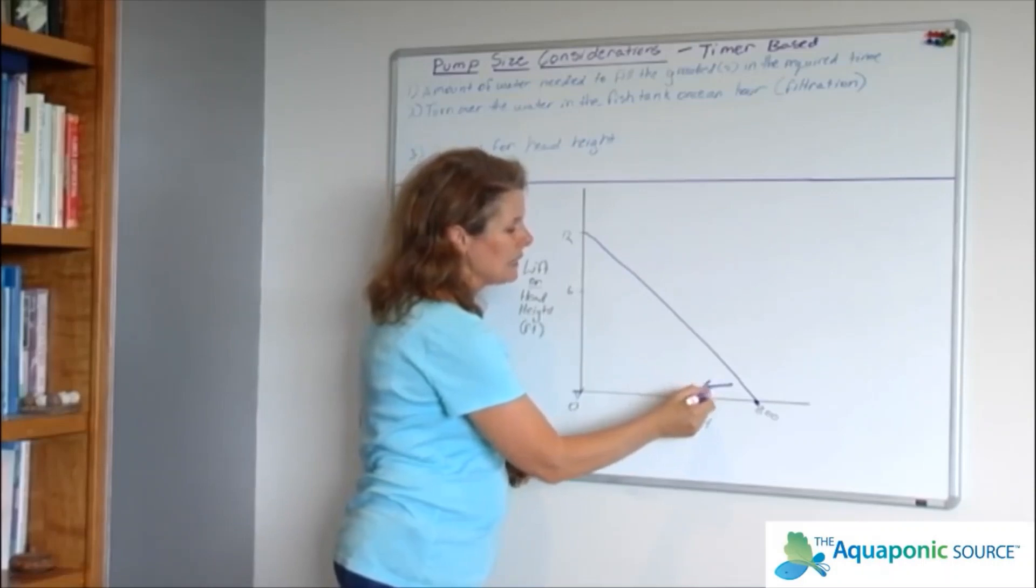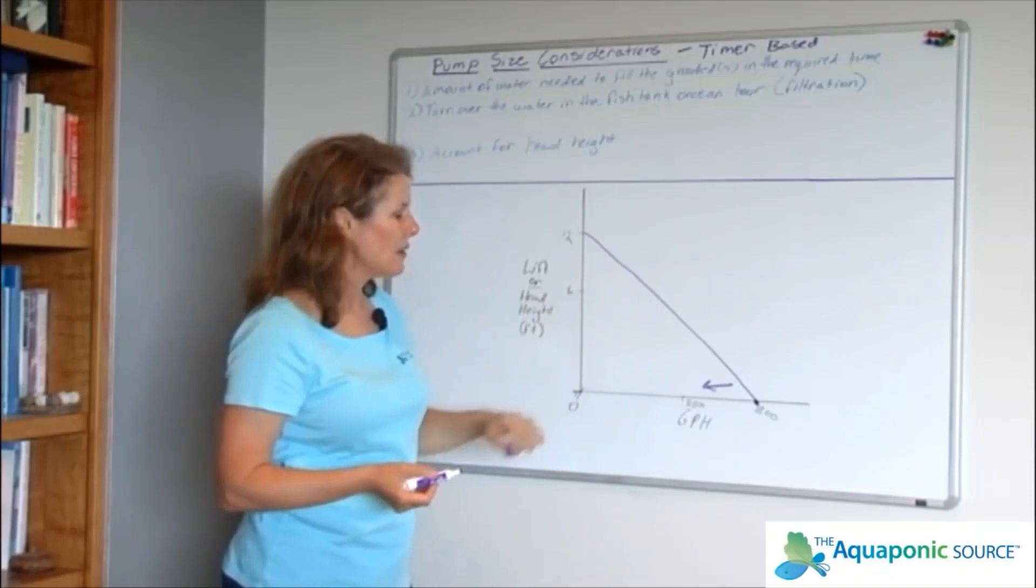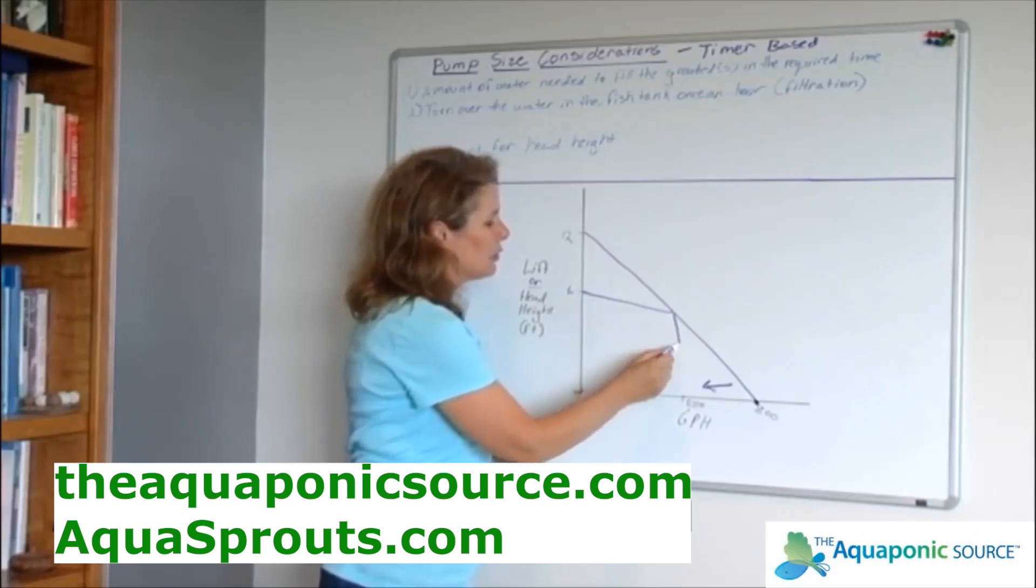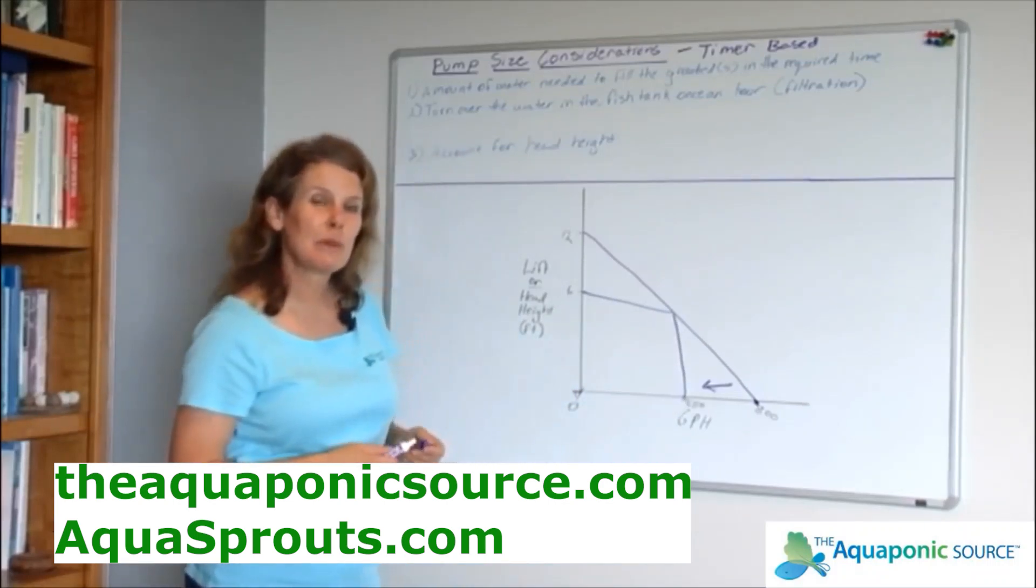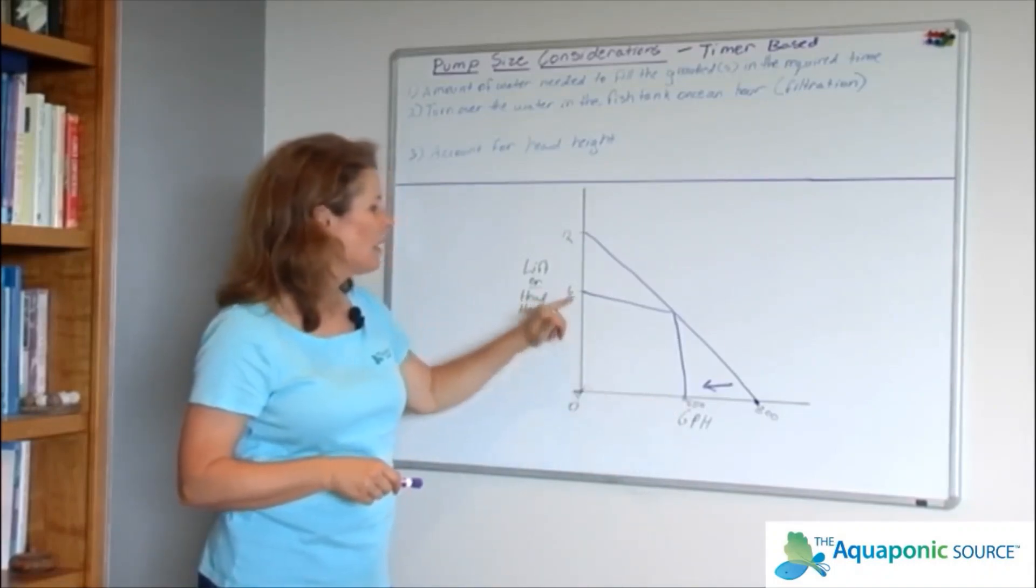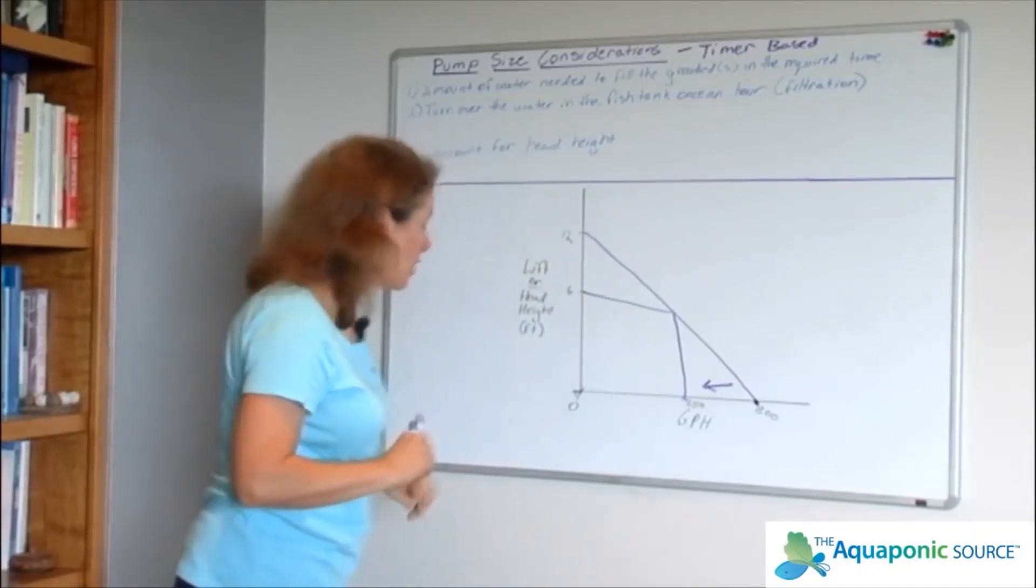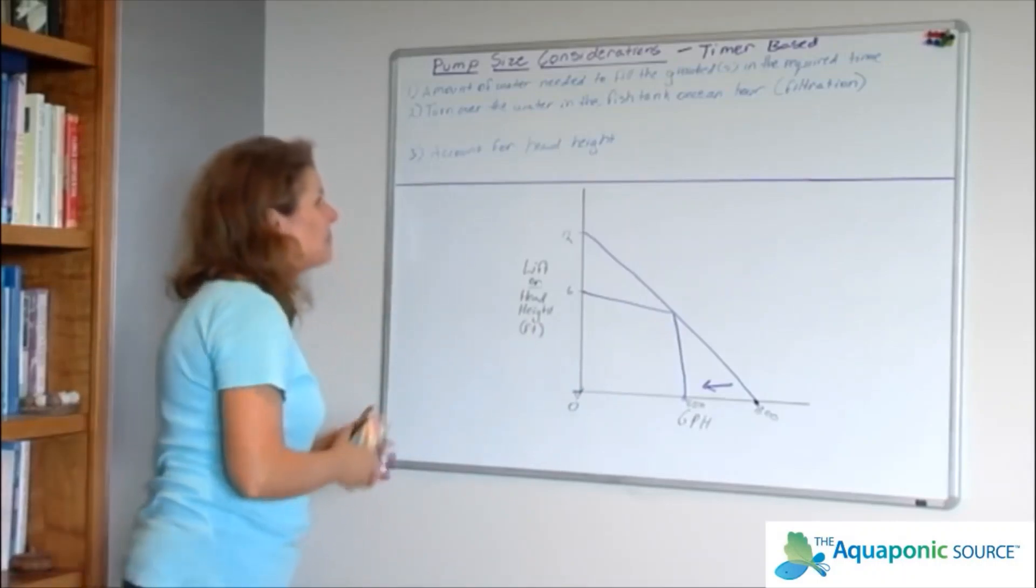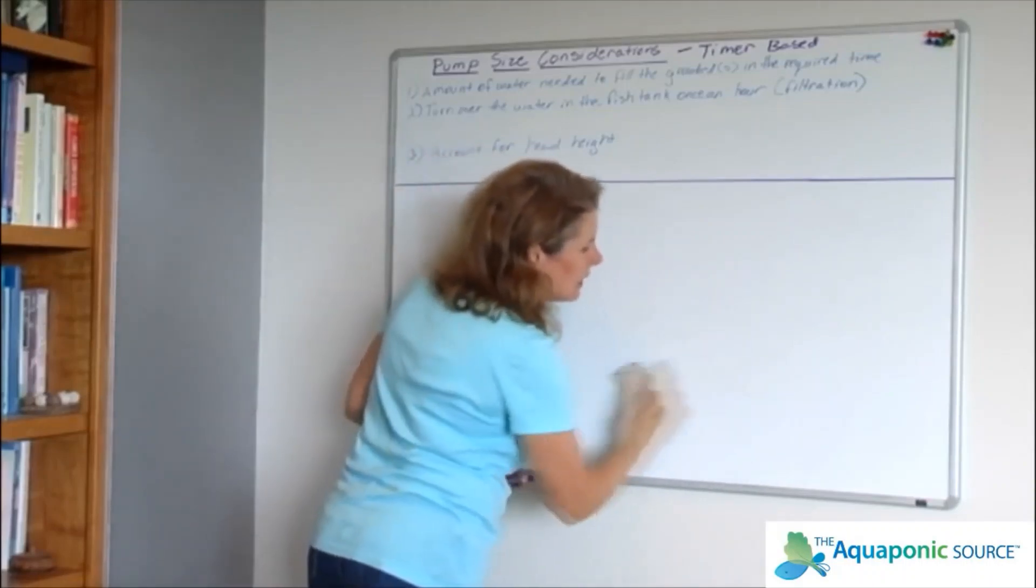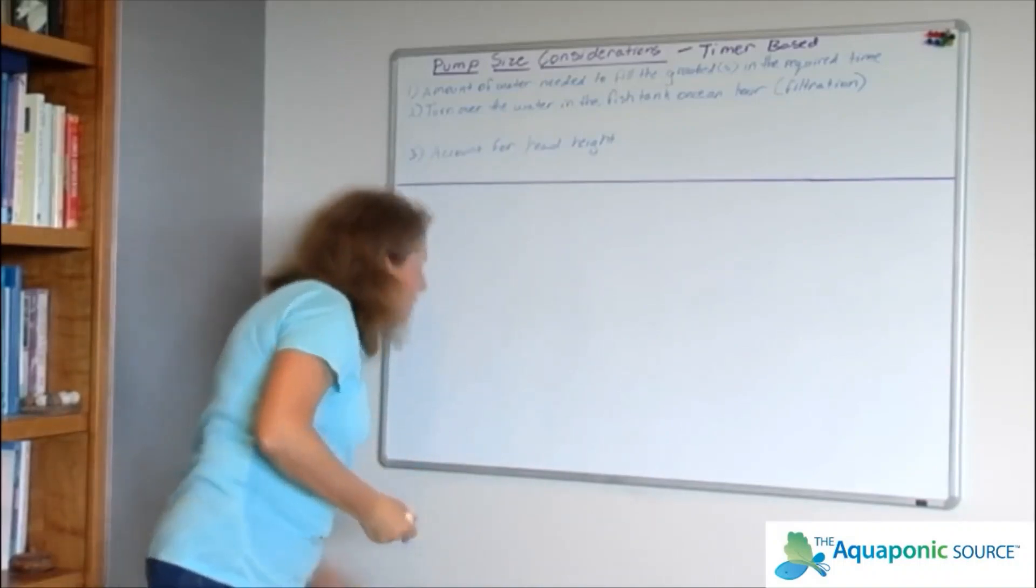This 800 gallon per hour pump starts here at zero lift, and as you go up higher and higher, you see that you're getting less and less performance. In fact, just to get another data point, at six feet of lift it looks like you're only pushing 550 gallons every hour if you're pushing it up to six feet of height. This is a very important thing to know about any pump that you're looking at. Now what I'd like to do is actually take you through an example of how to calculate the pump for a timer based system.